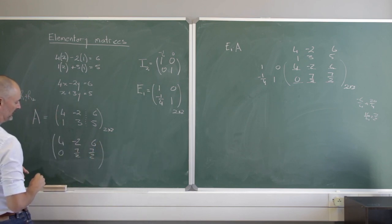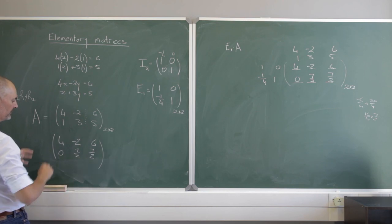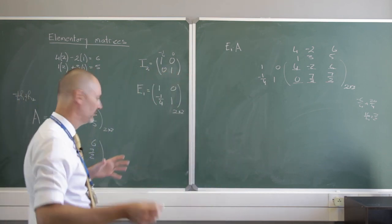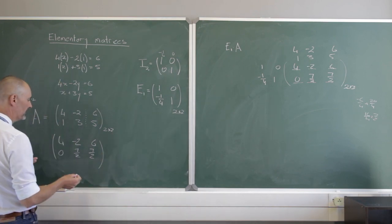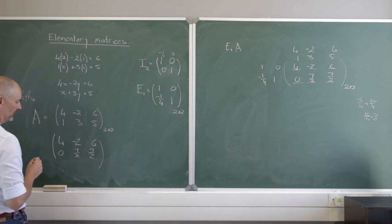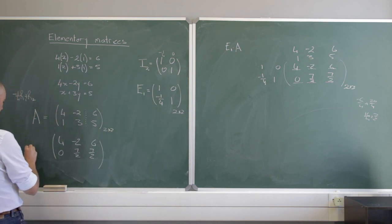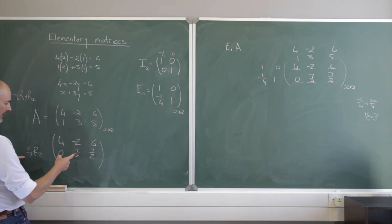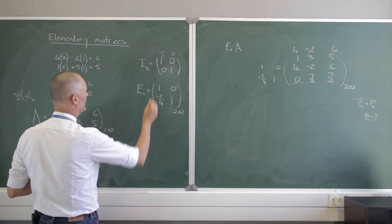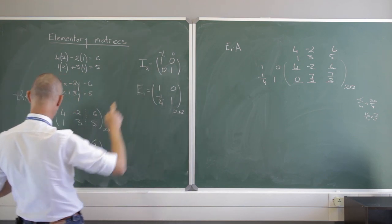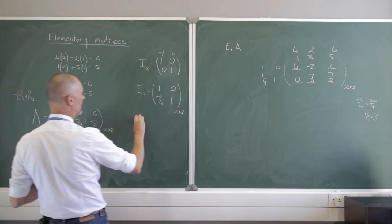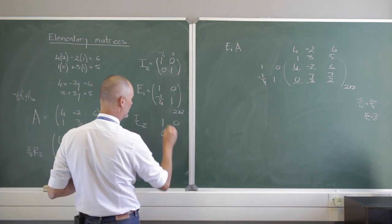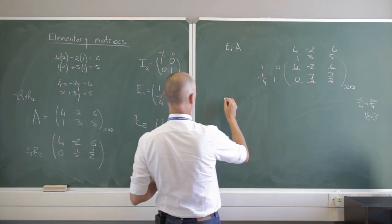These elementary matrices are not unique — you can do a variety of things and your matrices will look different depending on your steps. What I would do here is multiply row 2 by 2 over 7, giving a leading 1. Starting again with the identity matrix and multiplying row 2 by 2 over 7 gives E2: first row [1, 0], second row [0, 2/7].